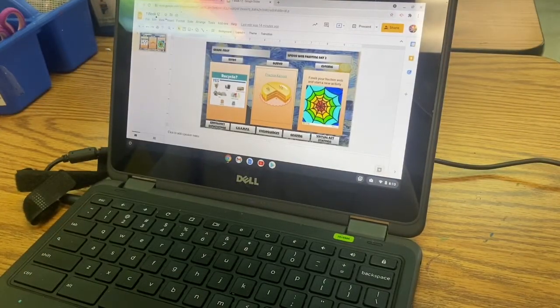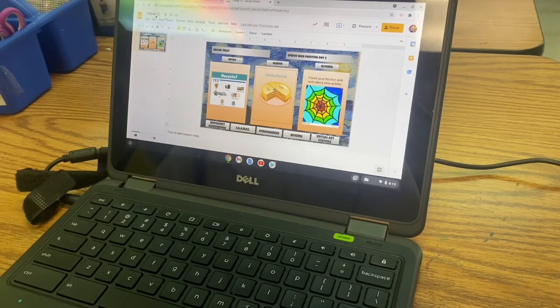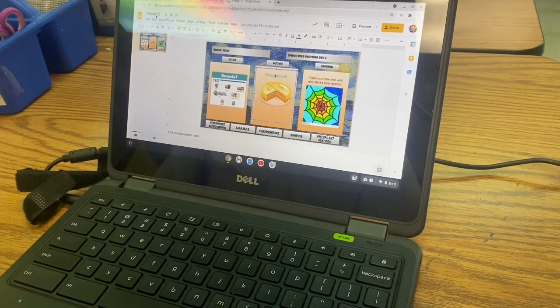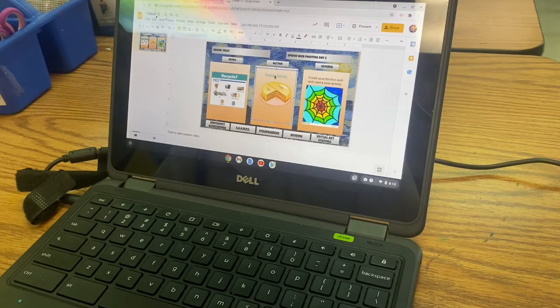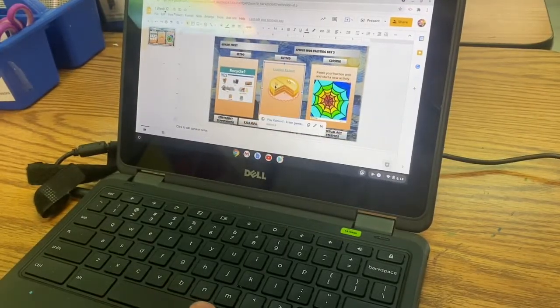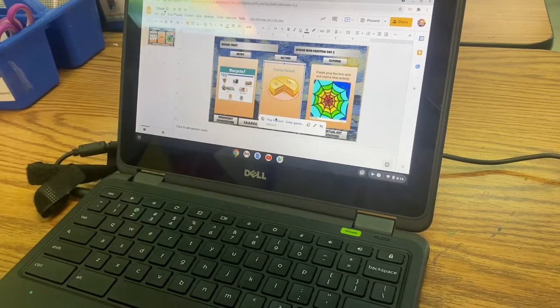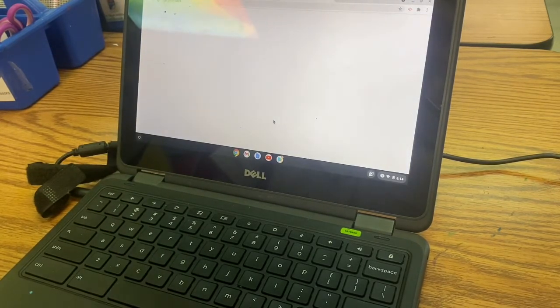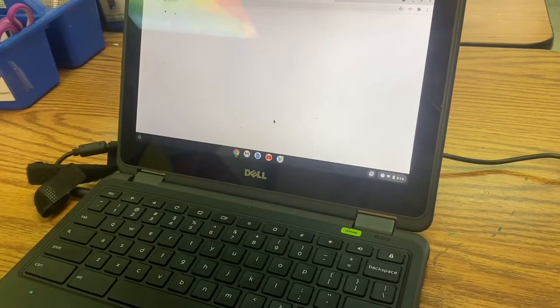All right, now I want you to find the Fraction Kahoot game. It's the one with the big pie or cake or whatever it is. You're going to click it once. This little white box is going to pop up. Click it twice, and it's going to take you to the Kahoot pin screen.